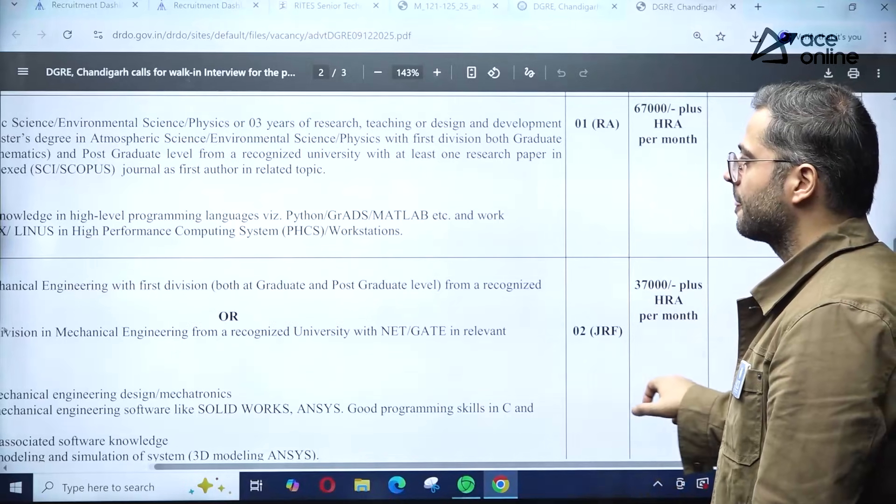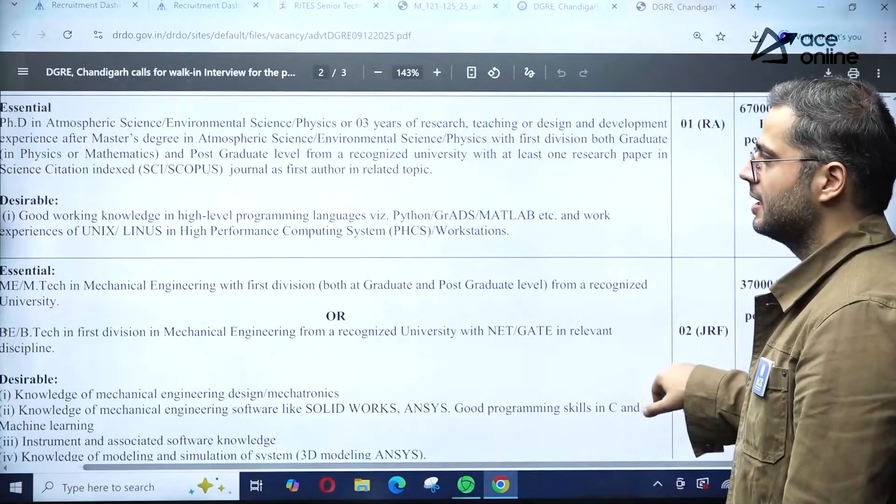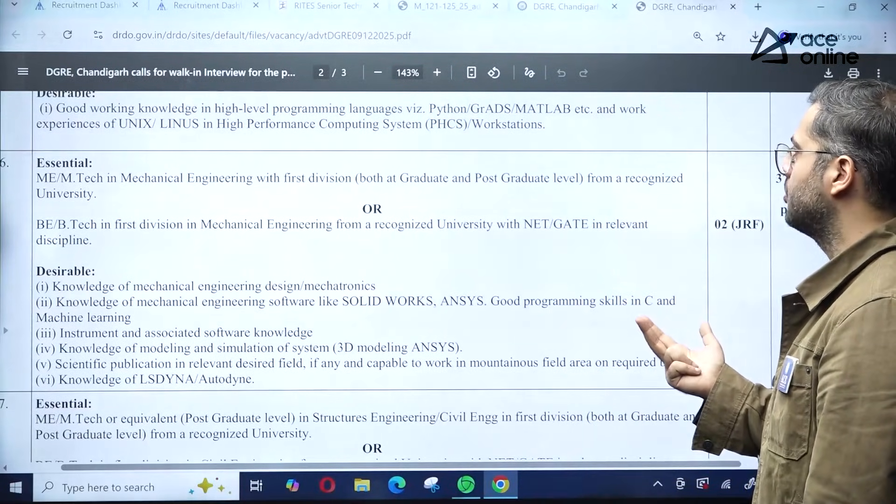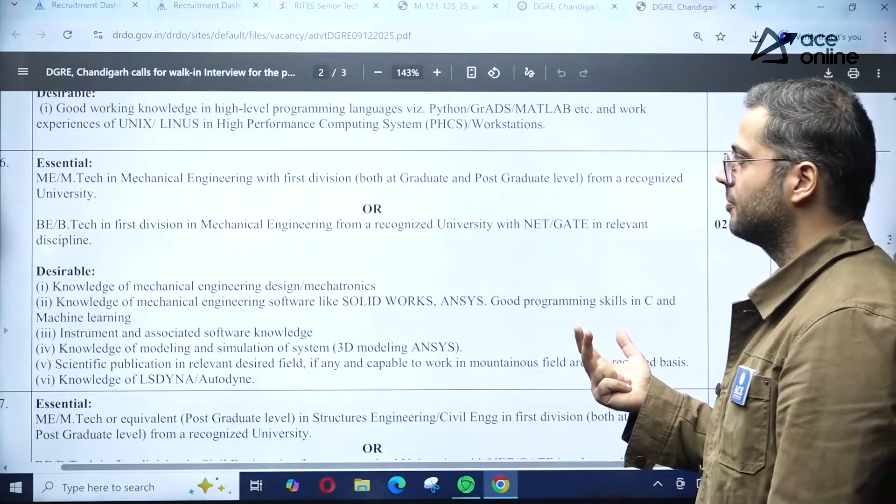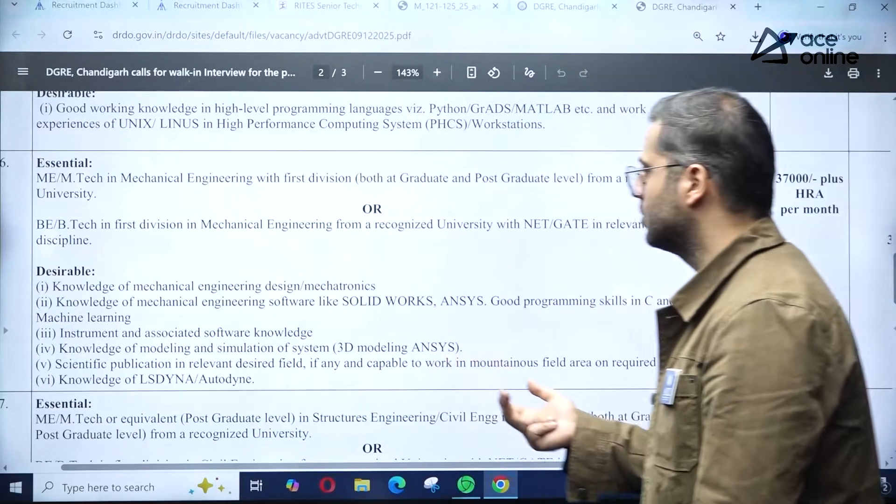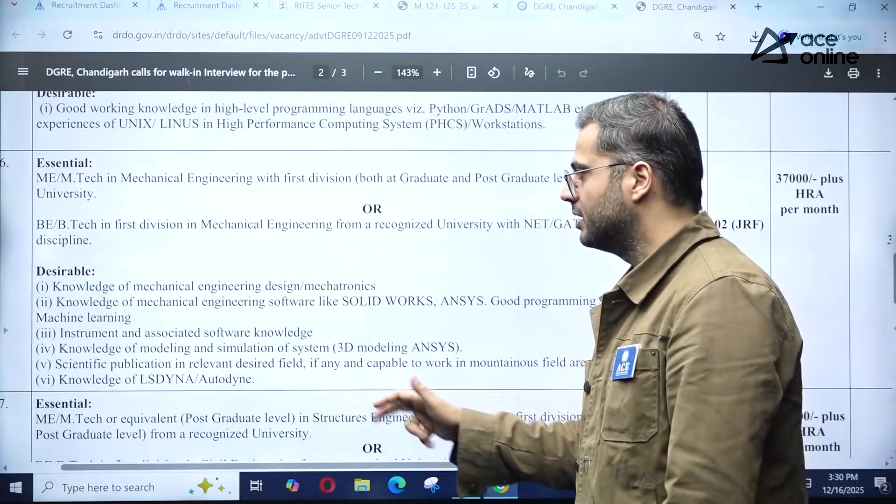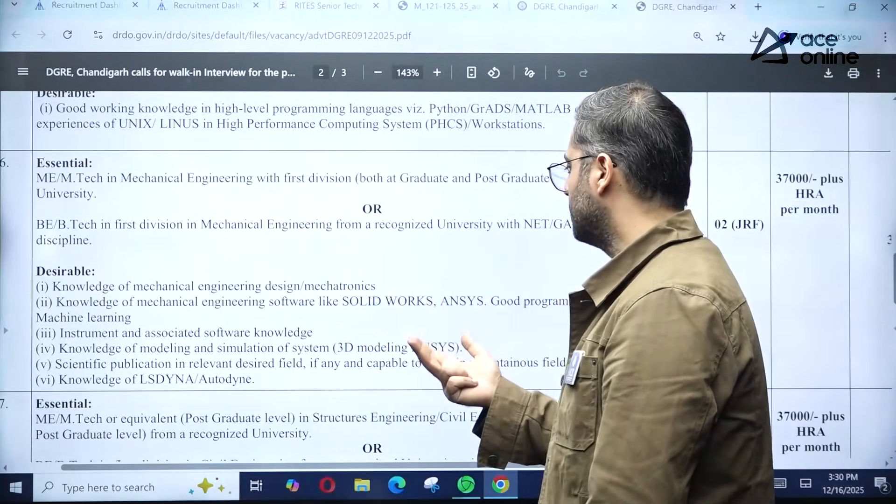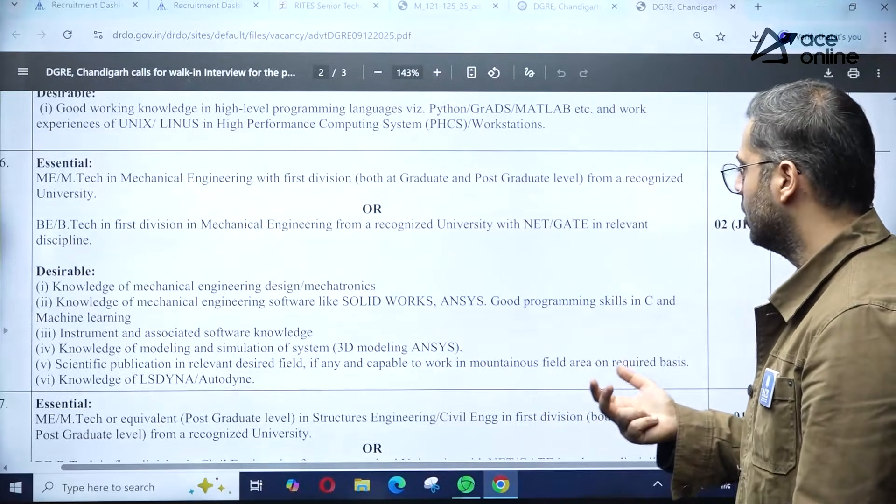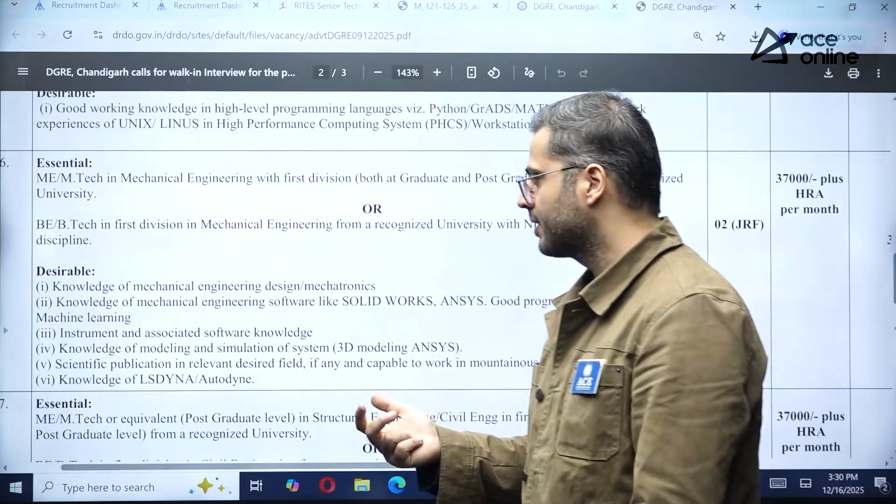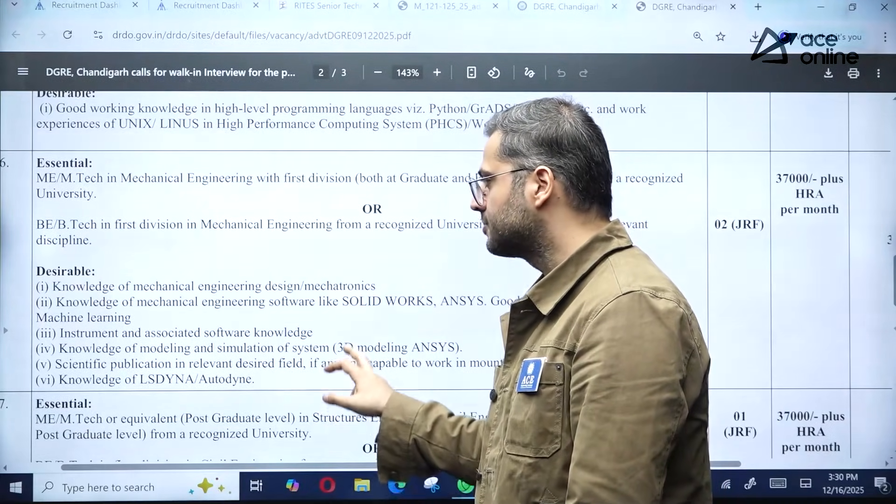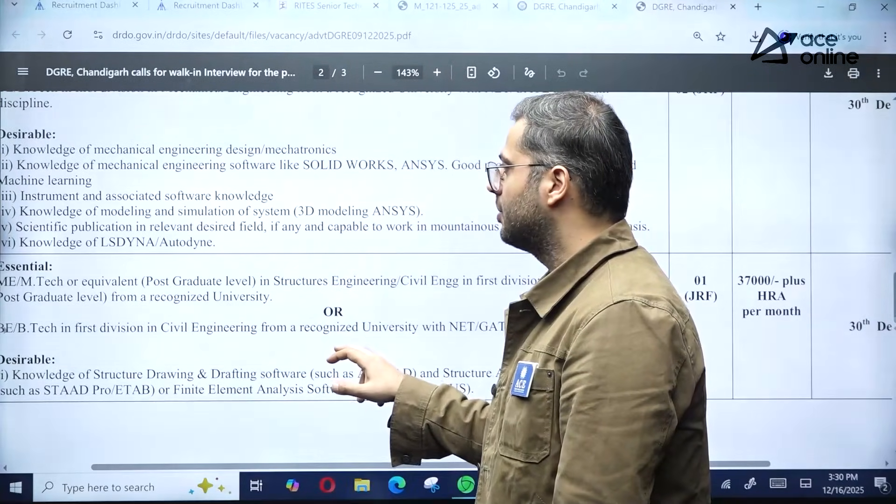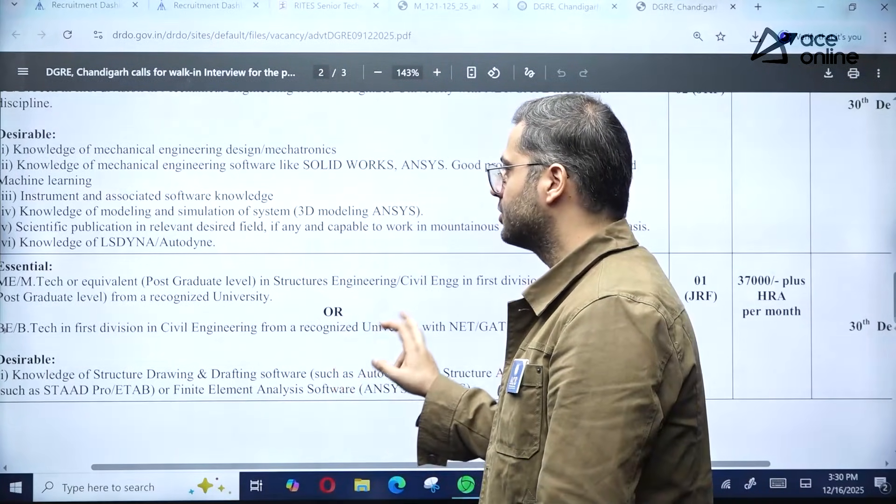Essential: M.Tech in Mechanical Engineering at both graduate and postgraduate levels, or B.Tech with a GATE scorecard. Desirable: mechanical engineering design, mechatronics knowledge, software tools like SolidWorks and ANSYS, good programming skills in C and machine learning, instrument and associate software knowledge, knowledge in modeling and simulation, 3D modeling and ANSYS, and scientific publications in relevant disciplines. Two JRF positions at 37,000 plus HRA per month, with 30th December as the interview date.